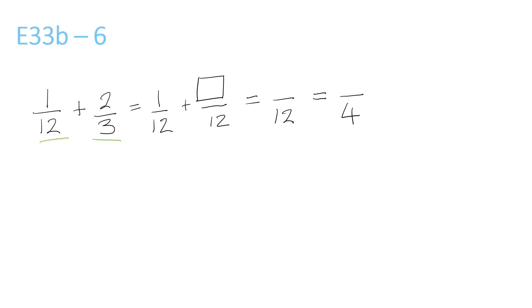These bottom numbers, 12 and 3, both go into 12 as the lowest number. 3 times 4 is 12, so 2 times 4 is 8. Now 1 plus 8 is 9 over 12, and because the top and bottom can both be divided by 3, we do that. So it's 9 divided by 3 is 3, and 12 divided by 3 is 4.